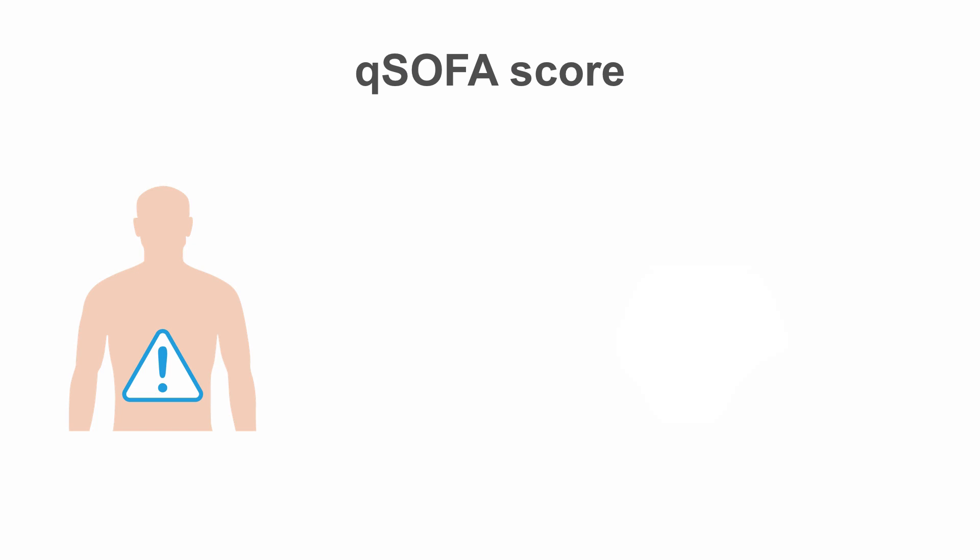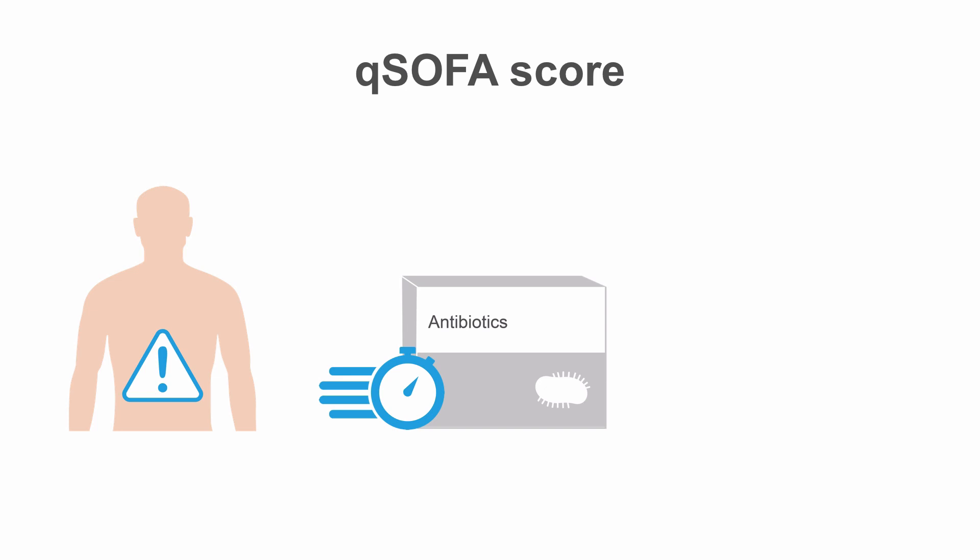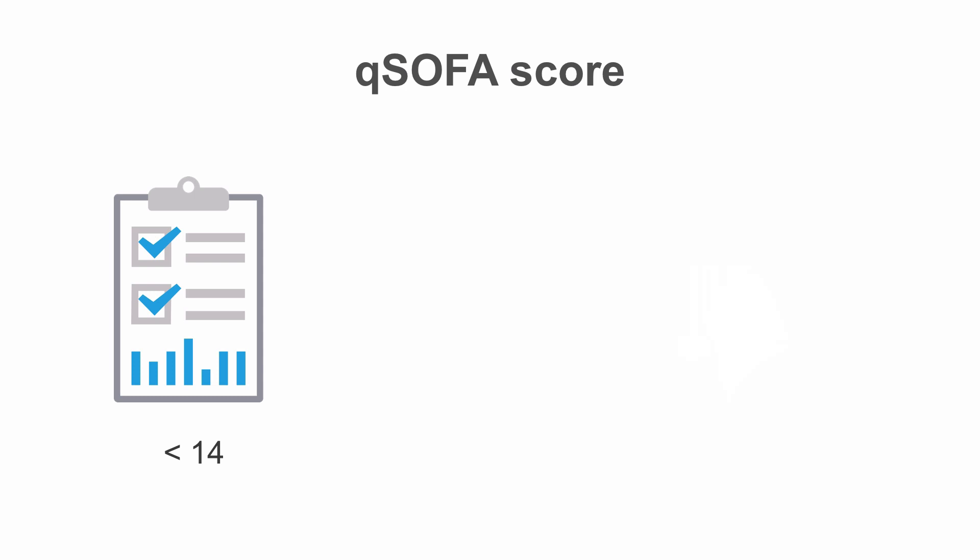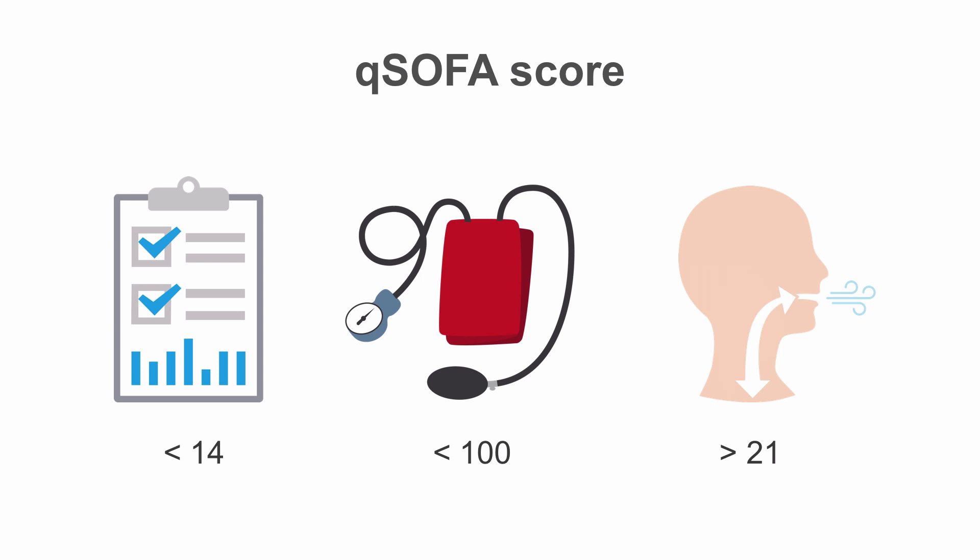The quick sequential organ failure score, or qSOFA, was developed to prompt physicians to look for organ dysfunction, initiate early antibiotic treatment within one hour, and refer the patient to an ICU. The three parameters to quickly assess are: altered mentation with a Glasgow coma score below 14, systolic blood pressure below 100, and a respiratory rate of over 21. A score of greater than or equal to two is highly suggestive of organ dysfunction and a poor outcome of sepsis.